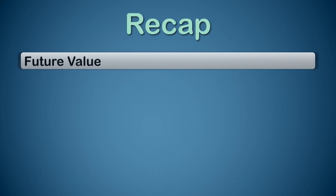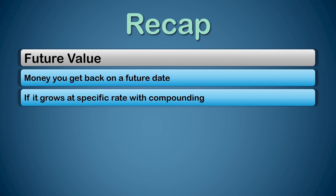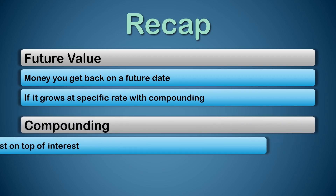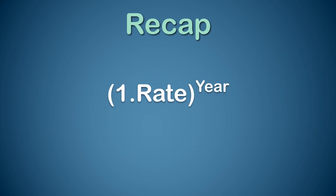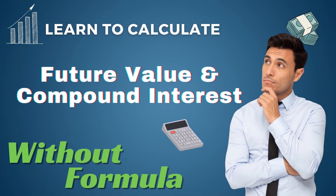Let's have a quick recap of future value and compounding which we discussed in the previous video. Future value is nothing but how much money you will get back in the future if you invest at a particular rate for a certain period of time with compounding interest. Compounding means we are adding interest to the principal and then calculating interest on top of interest as well. The generic shortcut to calculate future value is (1 + rate) to the power years, where the rate should be in decimal format. If you haven't seen the video where I discussed this shortcut in detail, please watch that before continuing. The link is in the description below.